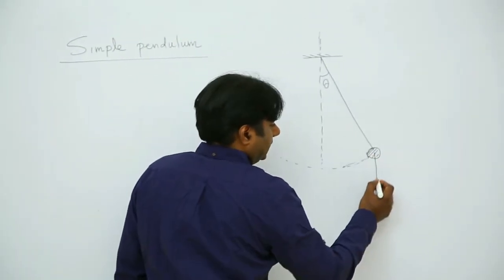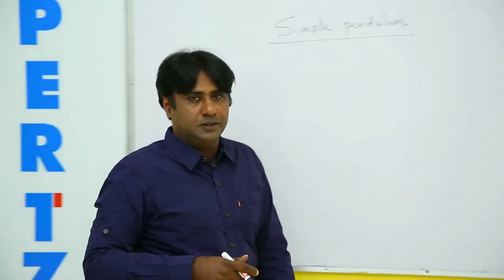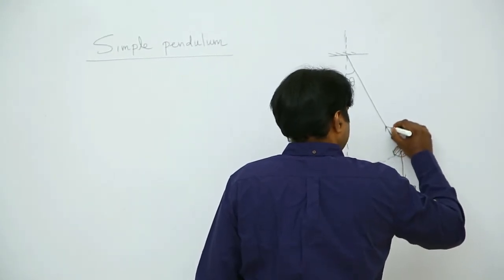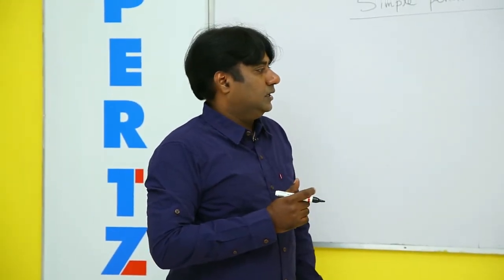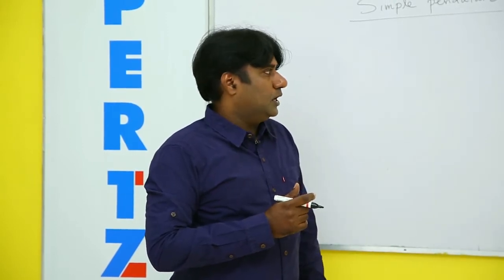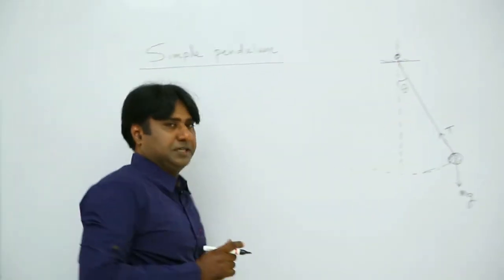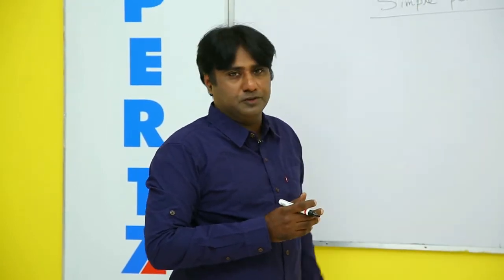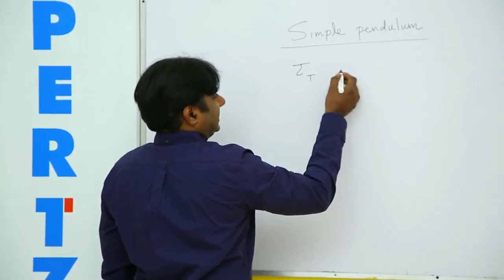For that we shall see which are the forces acting on that bob. The forces acting on the bob are its weight MG acting, one of the forces. The second force is the tension acting through the string. These are the only two forces acting which I have marked as T tension and MG as the weight of the bob. Now out of these two, about this point of suspension there is no torque provided by tension because tension passes through the point of suspension. So what I can write is torque due to tension equal to zero.